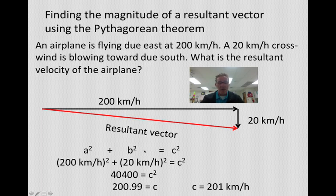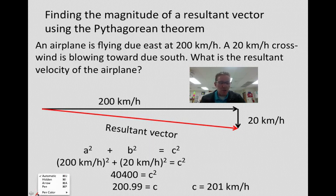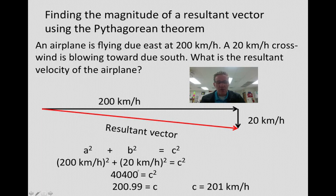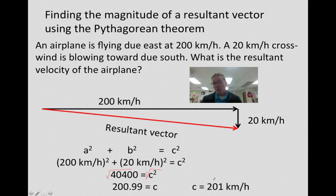When I do that, I get 40,400 equals C squared. To get rid of our squared, we would have to take the square root of both sides. So we're going to end up with 200.99 equals C. As far as our magnitude, C is going to be equal to 201 kilometers per hour.